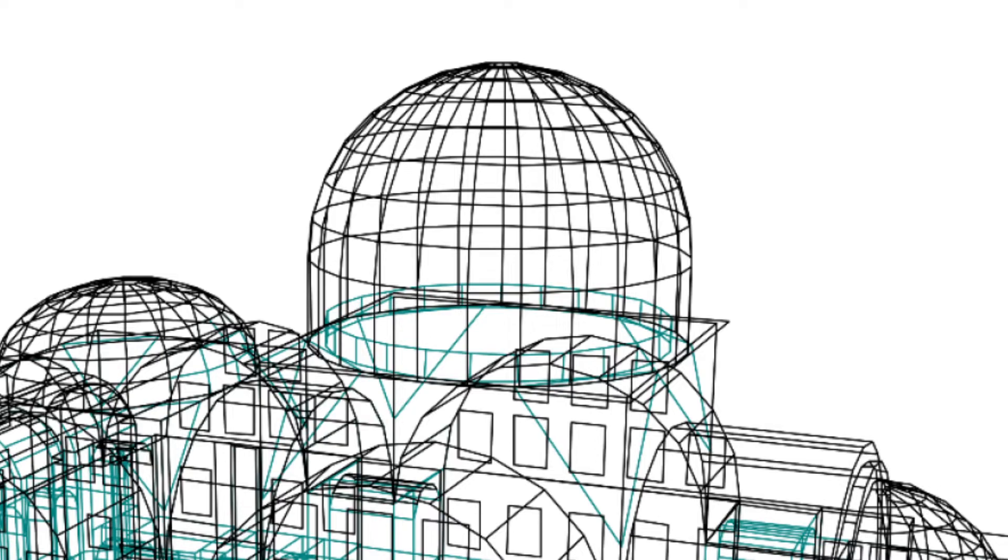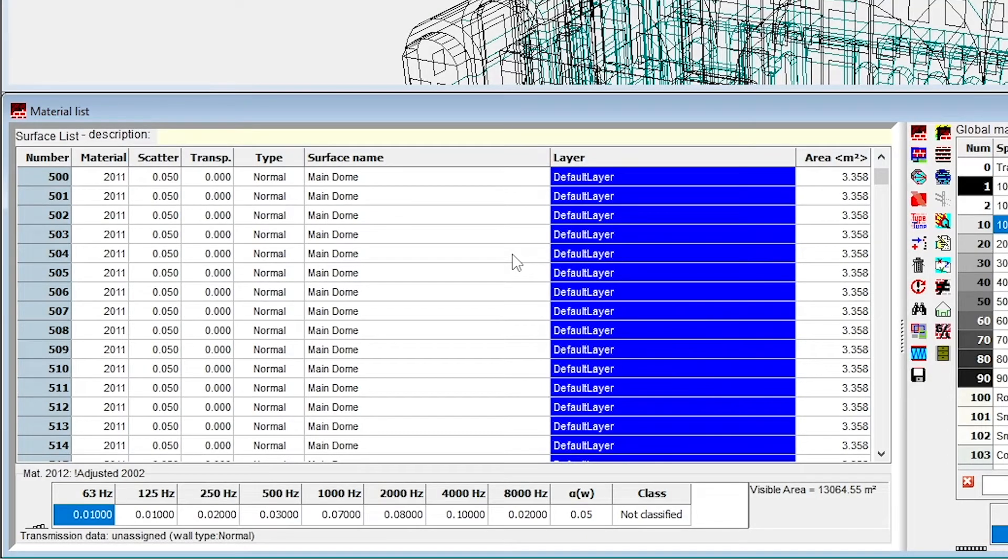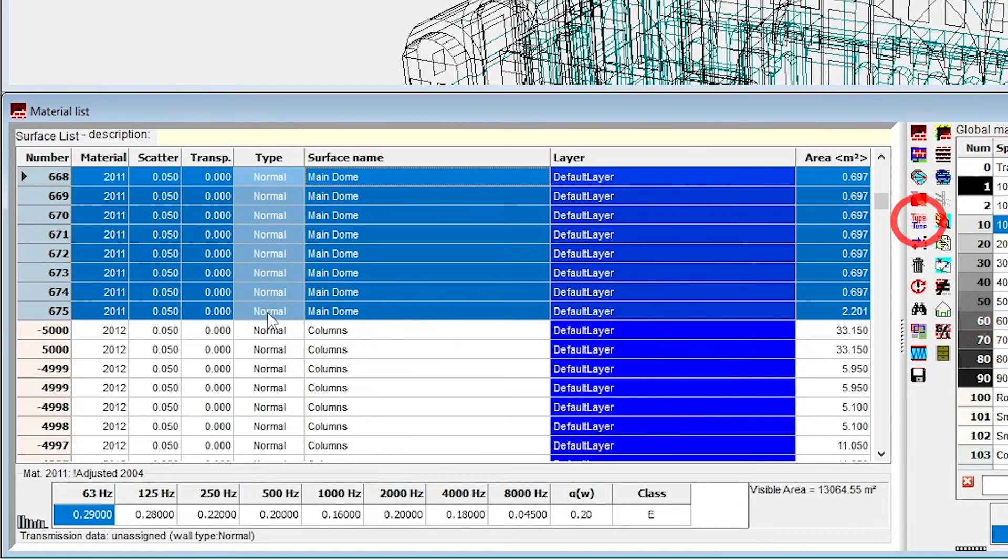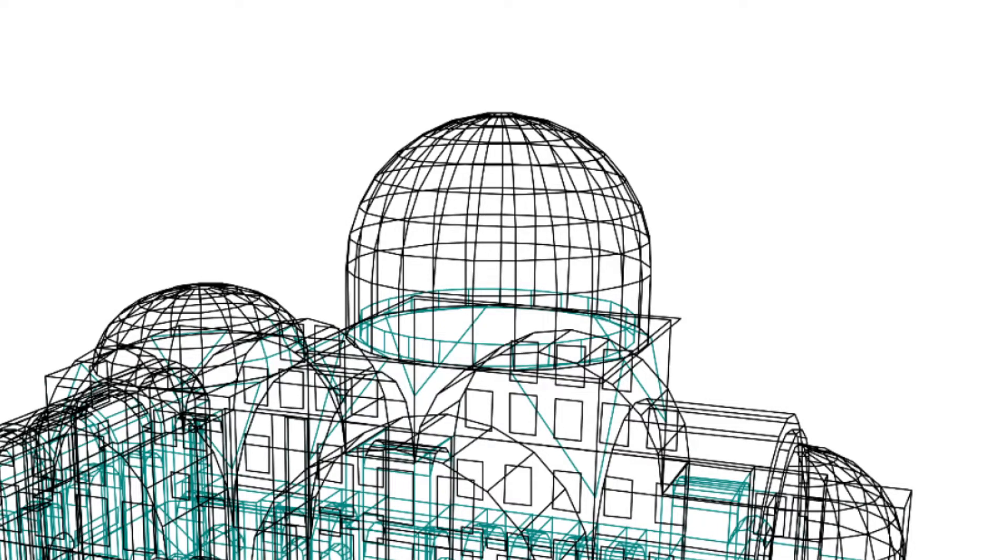In this case, the reflection-based scattering coefficient can produce additional unwanted scattering from the edges connecting the surfaces. One can avoid this by selecting the flat surfaces that represent the curved surface and configuring them as fractional. ODEON will then treat the surfaces as a single surface and will not produce additional scattering at the connecting edges.